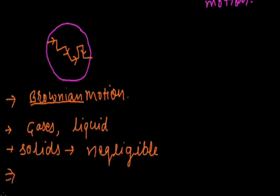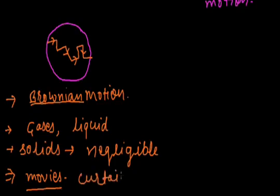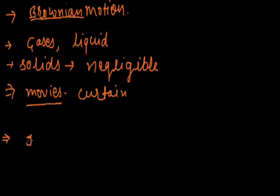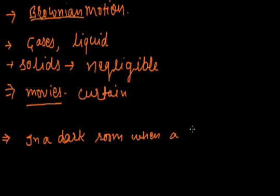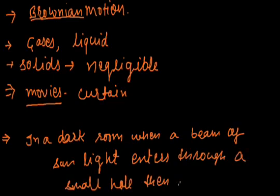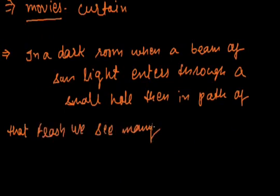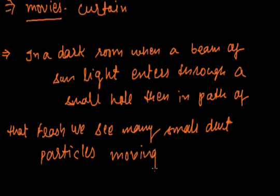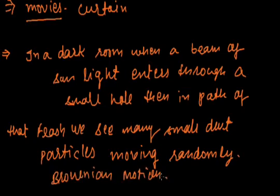Another example of Brownian motion: in a movie theatre, you can see a beam of light striking the screen, and in the path of that beam you see many particles moving here and there — that is Brownian motion. Similarly, in a dark room when a beam of sunlight enters through a small hole, you can see many small dust particles moving randomly in the path of that light. This is also Brownian motion.